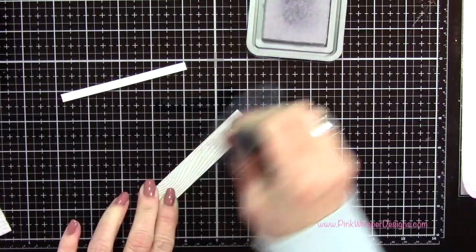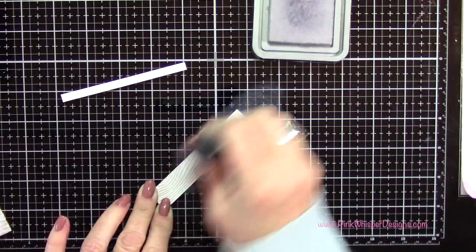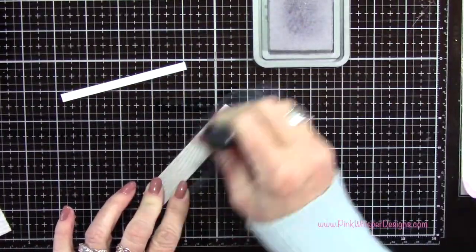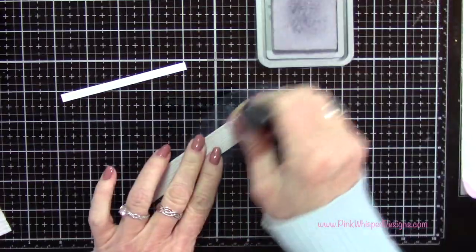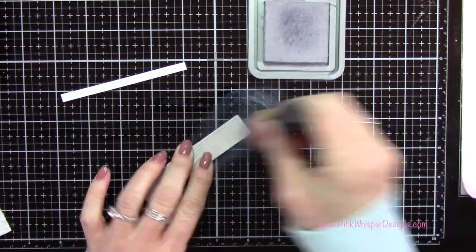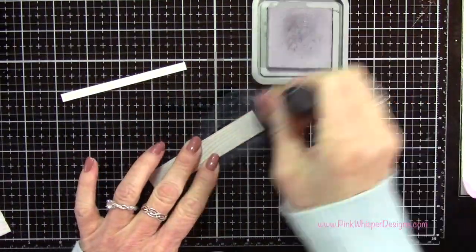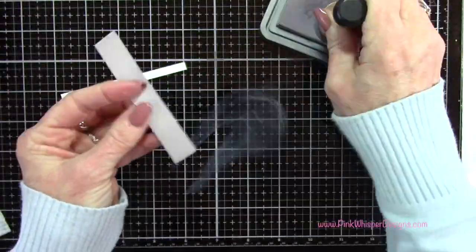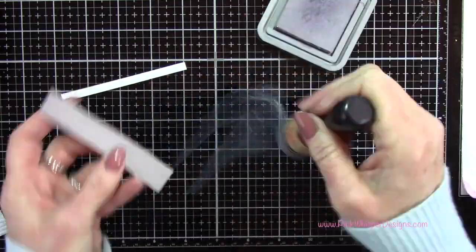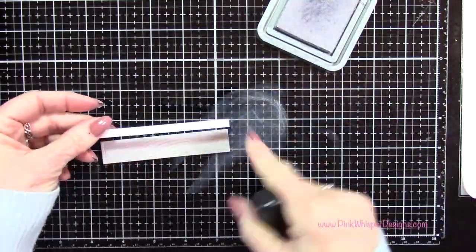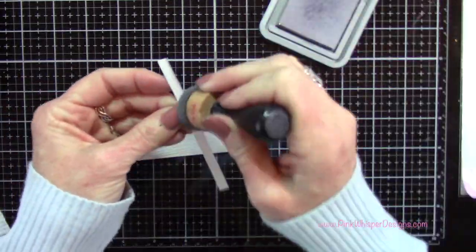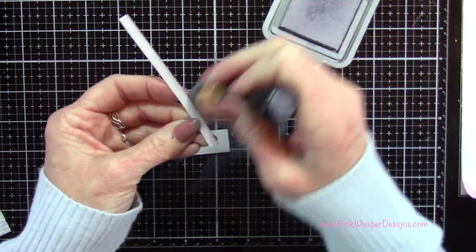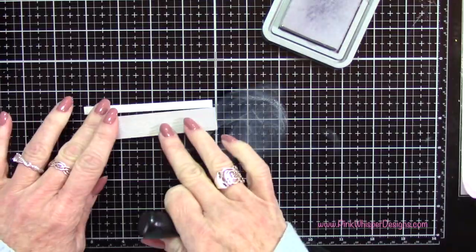Now using that same Hickory Smoke Distress Oxide, I'm going to add a little bit of color to this entire floor. I'm just rubbing that on, adding a little extra color to the two sides and keeping the center the lightest. Then I'm adding a little extra color along the top edge that's going to line up with this trim work. On the trim work, I want to add a little bit of a shadow there, right in the corner where the two meet.